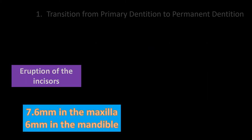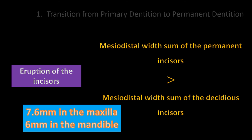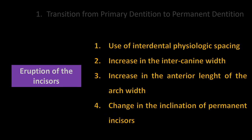The mesiodistal width of the permanent incisors is greater than that of the deciduous incisors. This difference is about 6 to 7 mm, meaning there is an obvious need for space for permanent teeth. Use of interdental physiologic spacing, increase in intercanine width, increase in anterior arch length, and change in the inclination of permanent incisors are mechanisms providing space for permanent incisor eruption.